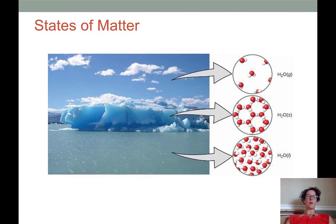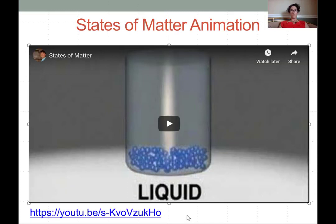While understanding whether a piece of matter is a solid, liquid, or gas is fairly intuitive at the macroscopic level, it's important to understand what is going on at the microscopic level. This YouTube video shows a useful representation of how particles move within each of the three states of matter that we will be covering.